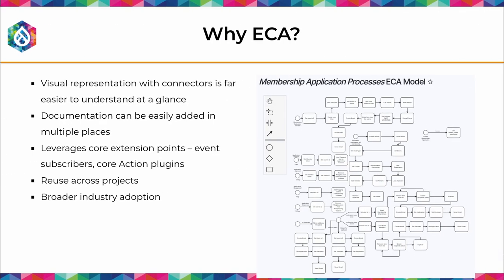It makes it really apparent what's happening in your model. It's a visual representation with connections that are far easier to understand at a glance. One of the things we really like about ECA is how you can build documentation in — you can add notes to models and documentation to each element. It's built on core systems: event subscribers, core action plugins. Basically, if these things are defined in the system, ECA can use them. It also has its own plugins for events and conditions, and there's a huge amount of existing stuff that's fully compatible.